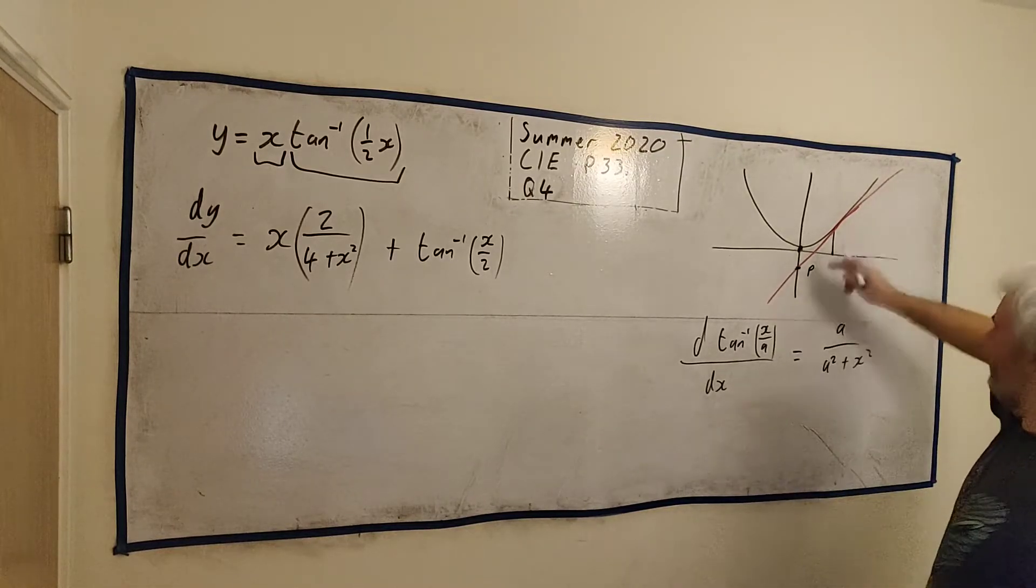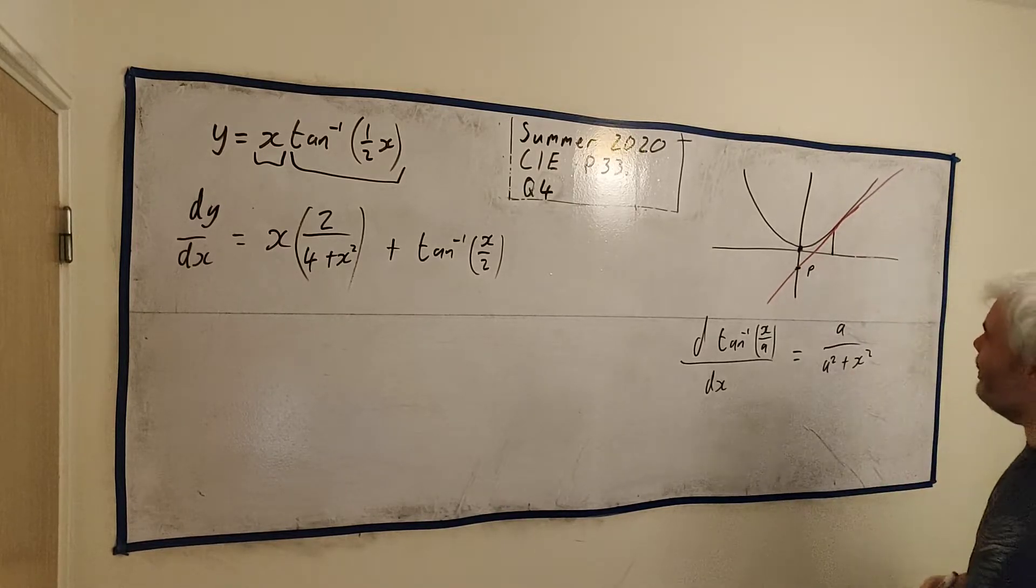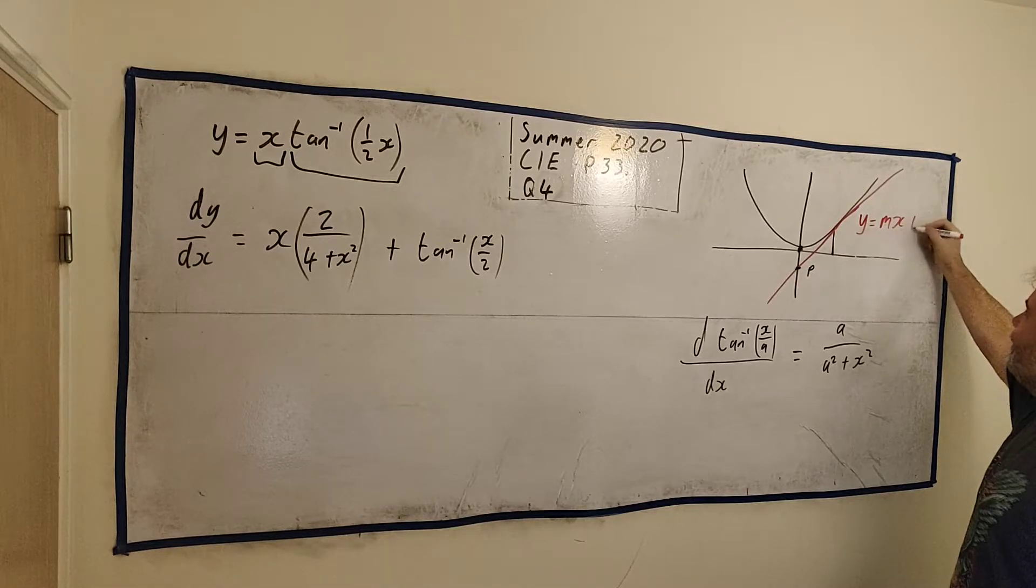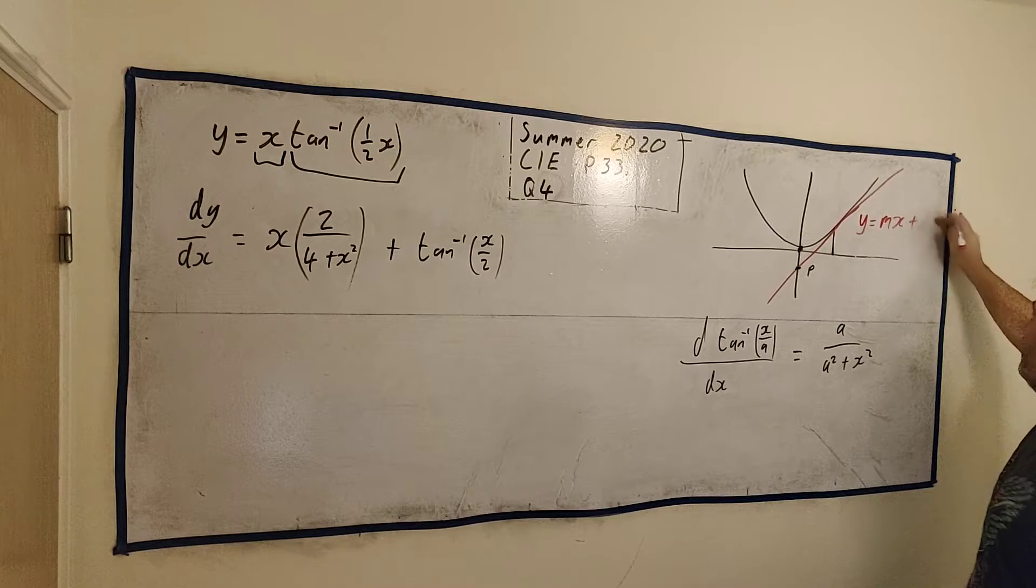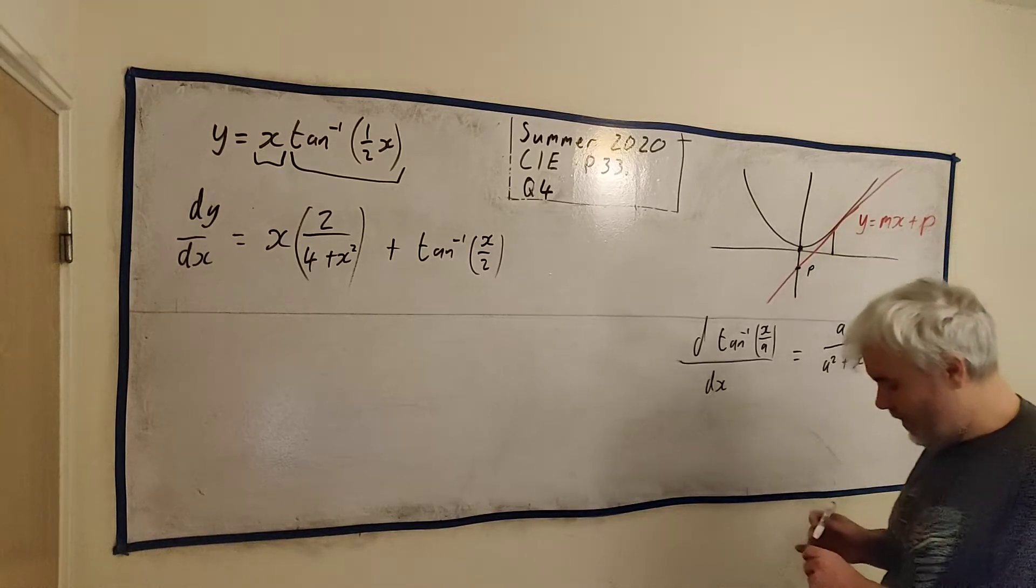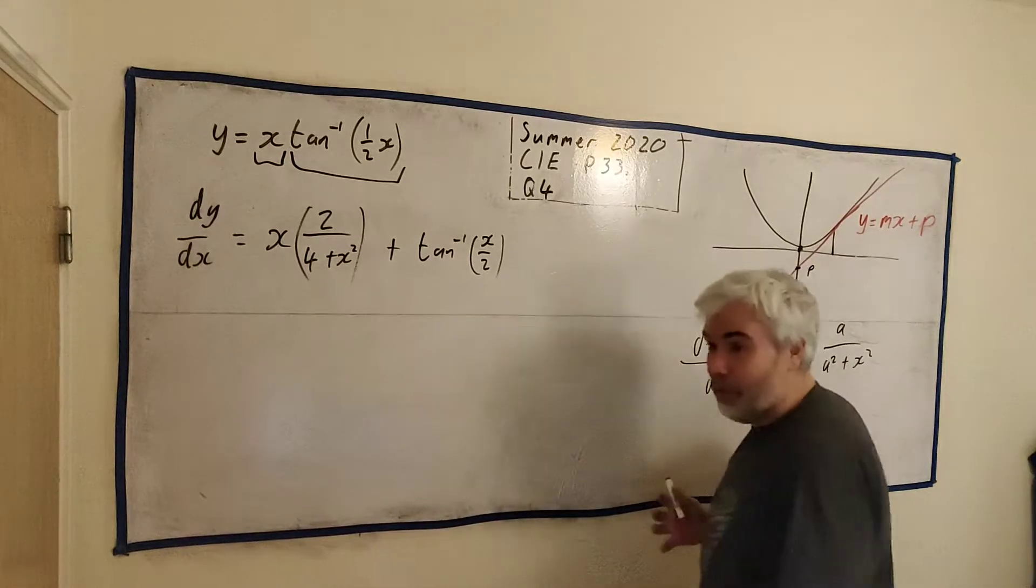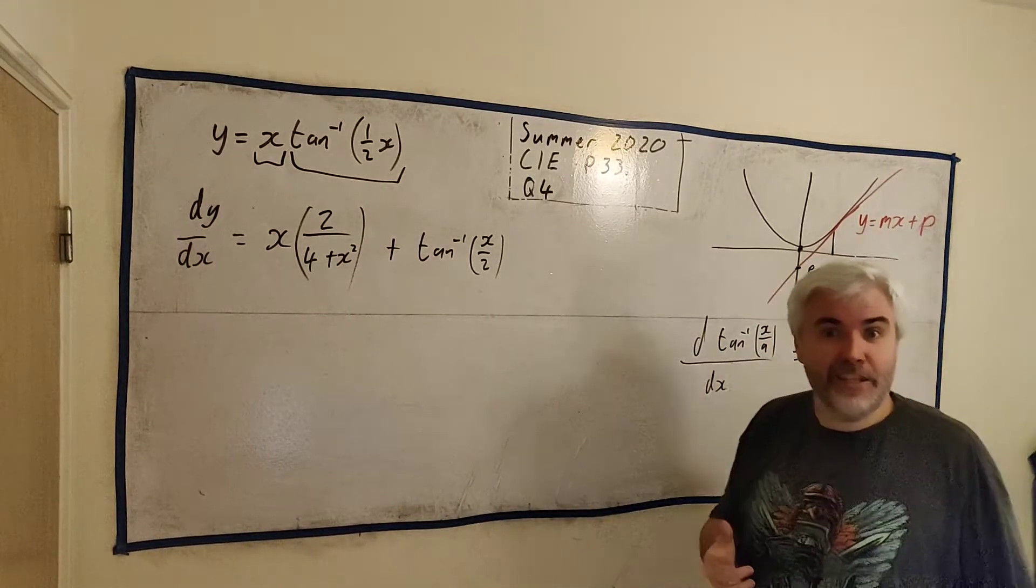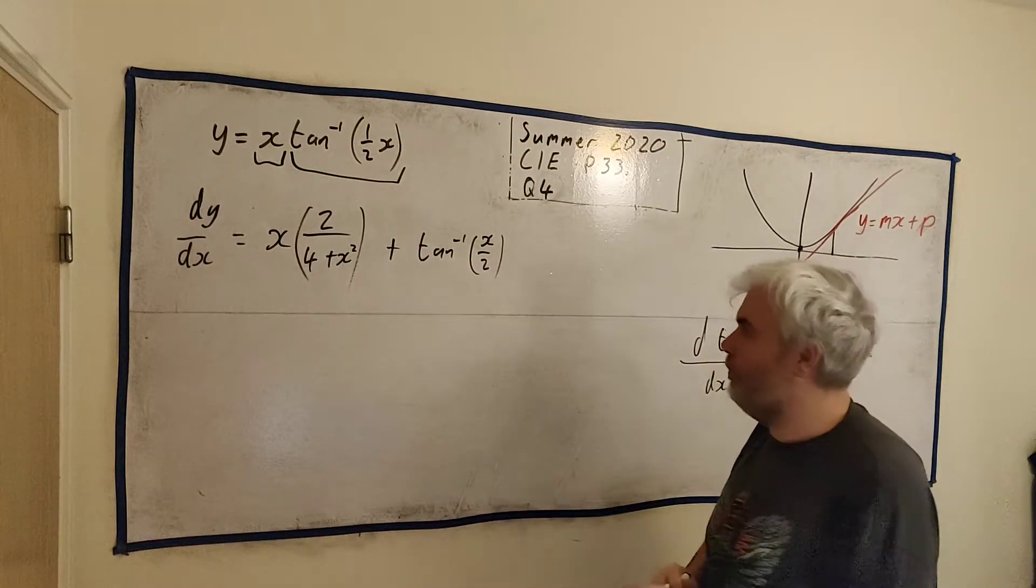If we find this: y equals mx plus c, or I guess P in this case, because it's going to equal P. So if we just get the equation of this line, we'll find P no problem. And the equation of a line, m is actually equal to the derivative. And we've got the derivative, so this should be no problem to us. Because the derivative, m, this slope, is equal to the derivative at x equals 2.